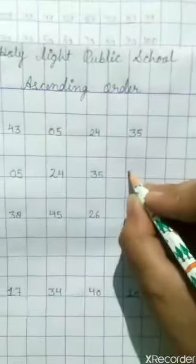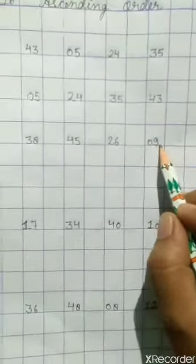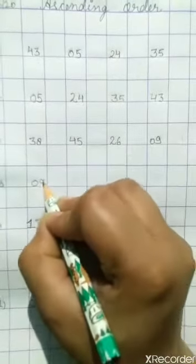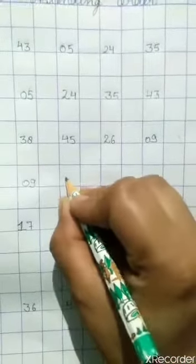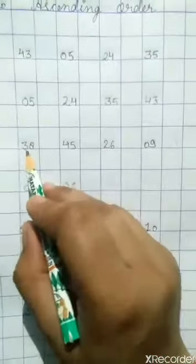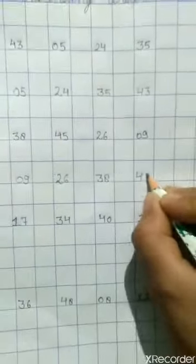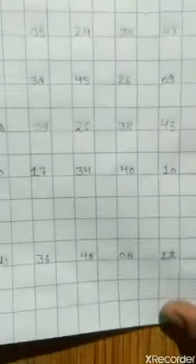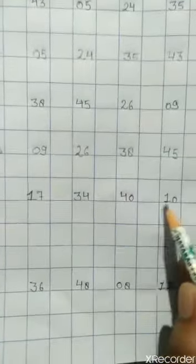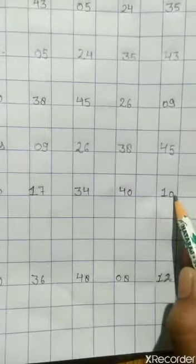इसी तरीके से बिल्कुल हमें यह करना है। 09 - यह हमारी 1 to 9 में आता है तो 1 to 9 हमारी सबसे छोटी हो गई। उससे बड़ी 26, फिर उसके बाद आता है 2 के बाद 3 - 3 की लाइन आती है तो 38, फिर उसके बाद 45 सबसे लास्ट में।